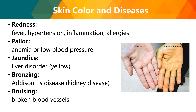Skin color can indicate different disease conditions. Redness typically denotes fever, hypertension, inflammation, or allergies. Pallor indicates anemia or low blood pressure. Jaundice — a yellowish tinge — can indicate liver disorder such as hepatitis. Bronzing is associated with Addison's disease, a kidney-related condition. Bruising indicates broken blood vessels and progresses through color changes: purple, green, yellow, and violet.